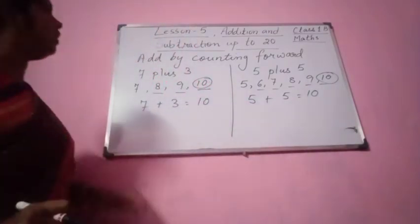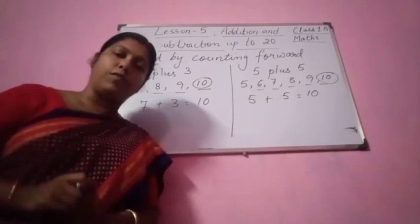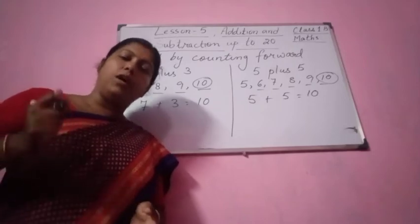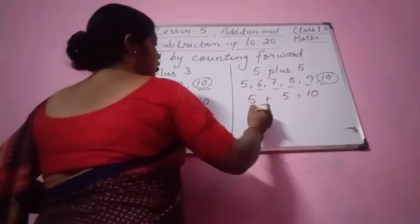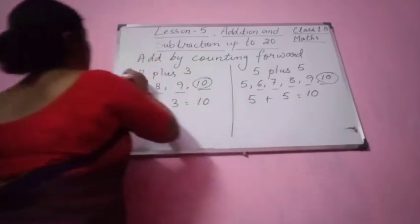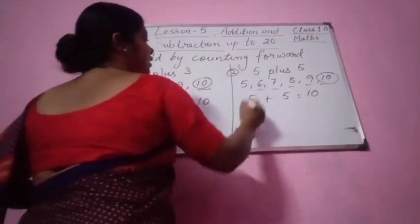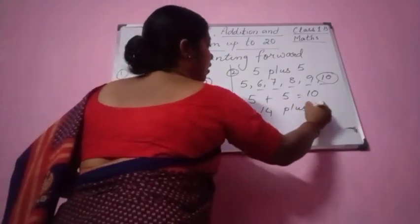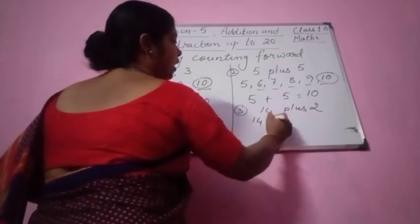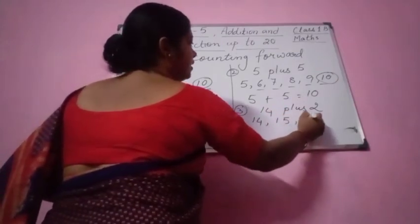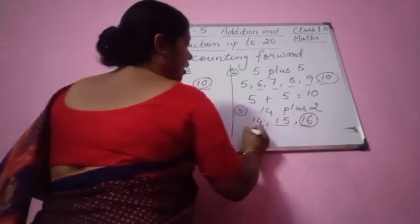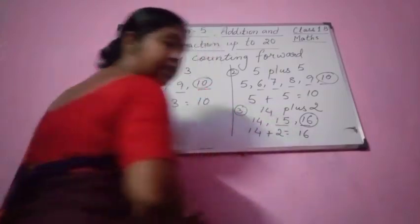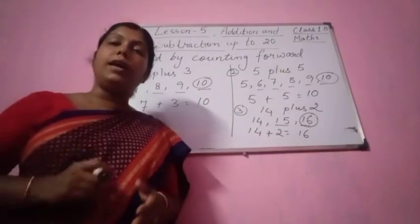So you can see here this is add by counting forward. Any other number also you can take. Like we can take 14 plus 2. Let us do this one also. 14 plus 2 — so after 14, 2 places: 15, 16. You see here — two places — 16. Now if you write down 14 plus 2 it will also be 16. So this is add by counting forward.